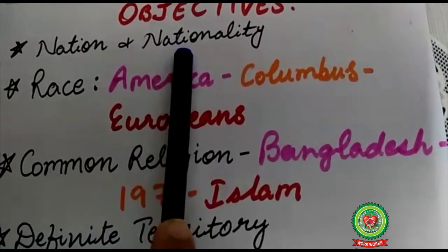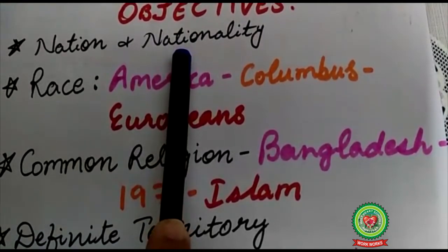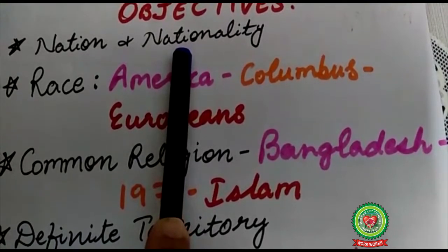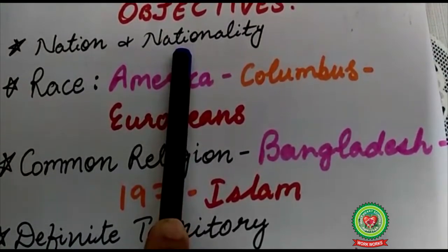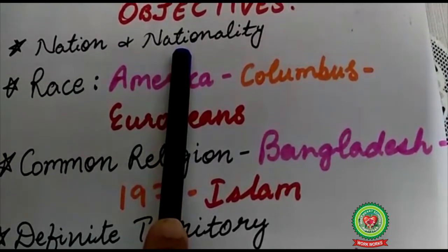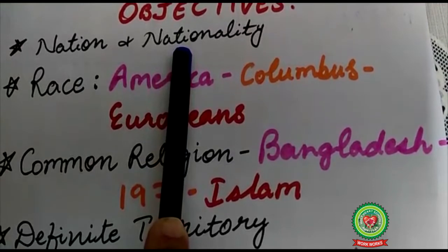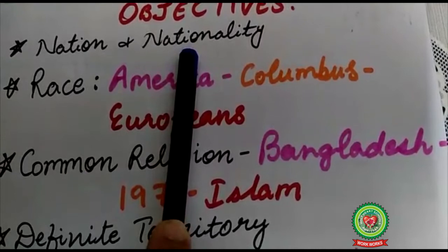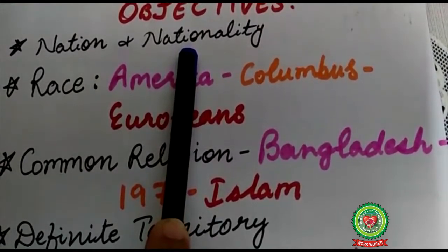Nation is the community of people inhabiting a fixed territory under an independent sovereign government. Nationality is a legal relationship between an individual and state — it is the country you come from. If you are living in a nation that is India, then your nationality is Indian. Nationality provides legal protection to the person. Nation means a group of people who feel bound by several ties.